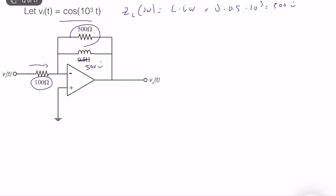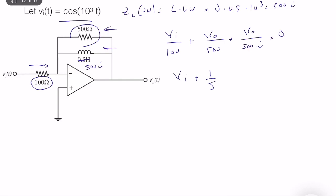We have the current of the resistor and the current of the inductor. We know that Vi divided by 100, plus Vi divided by 500, plus Vi divided by 500j, is equal to 0. Let's simplify this a little bit: this is equal to Vi times 1 plus 1 over 5 times 1 plus 1 over j, equal to 0.